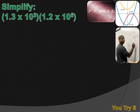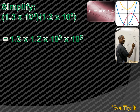Try this one. Hit your pause button, try the problem, and then hit your forward key to move on to the solution. We have 1.3 times 10 to the third, multiplied by 1.2 times 10 to the fifth. First, commute the numbers so similar ones are together: 1.3 times 1.2, and 10 to the third times 10 to the fifth. Multiply 1.3 times 1.2 to get 1.56, then use the product of powers property — add the exponents 3 and 5 — to get 10 to the eighth. The simplified answer is 1.56 times 10 to the eighth.